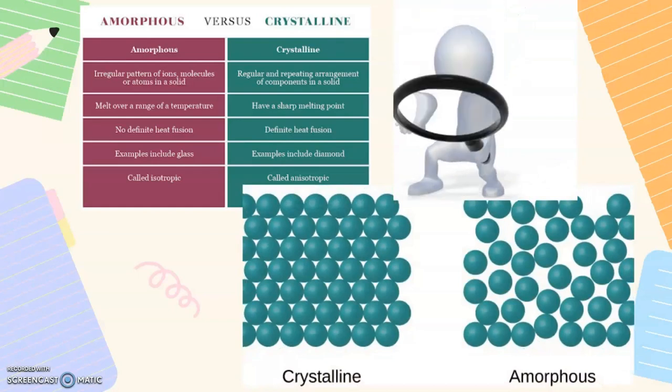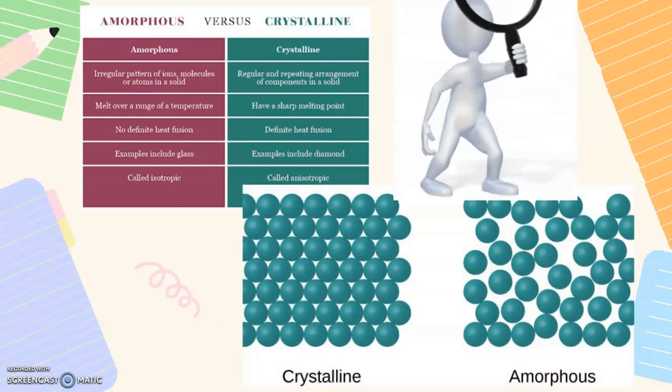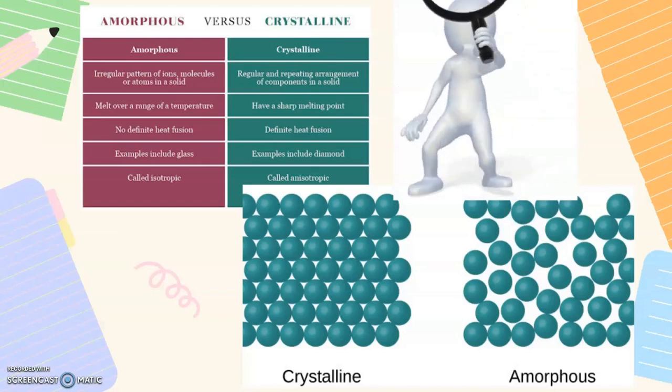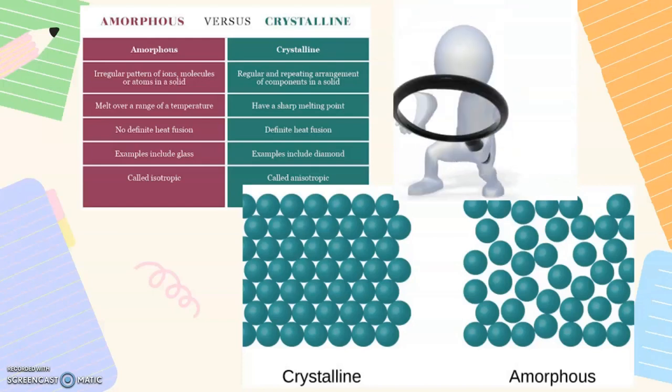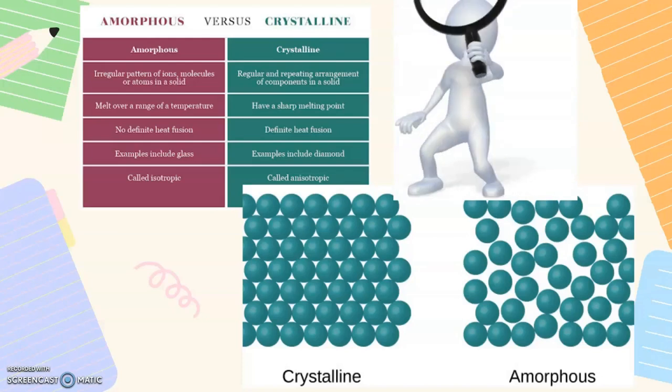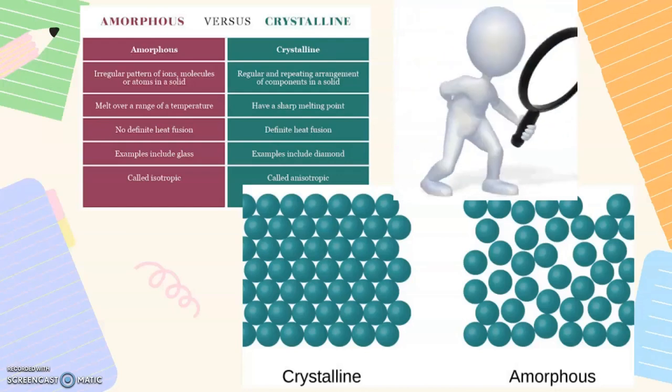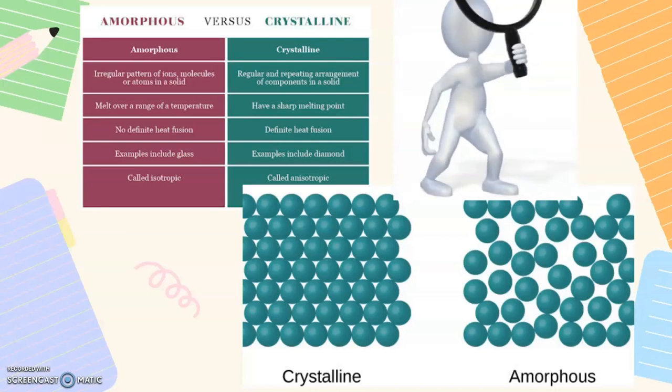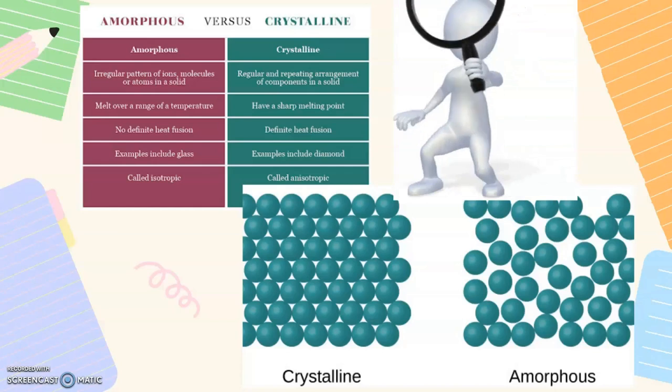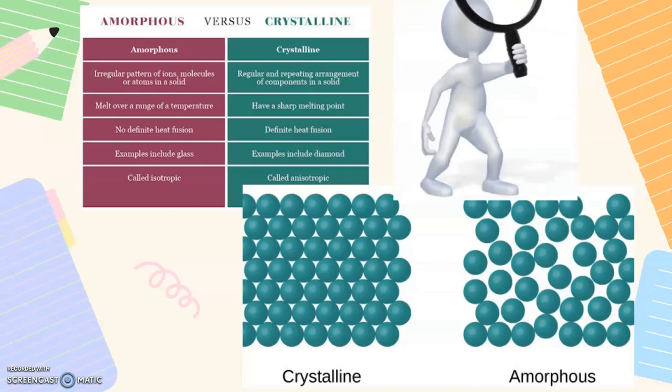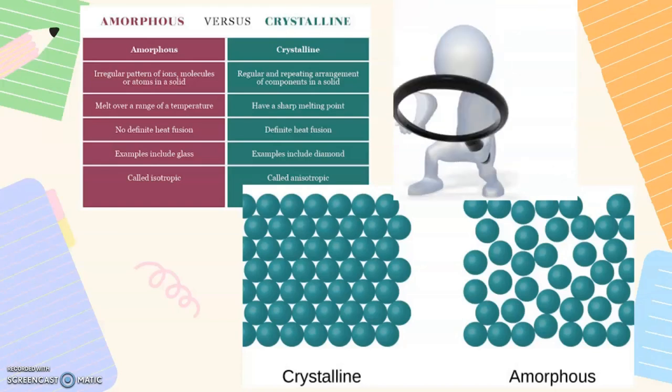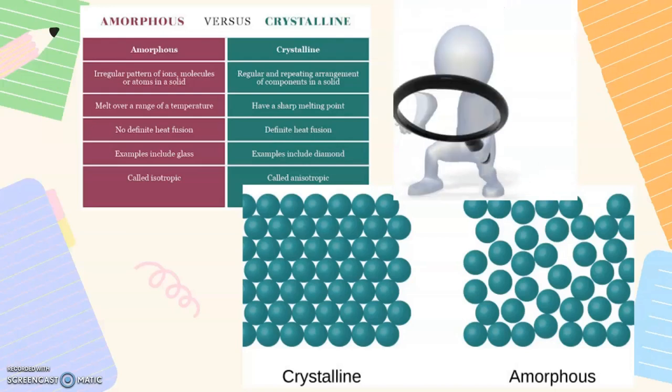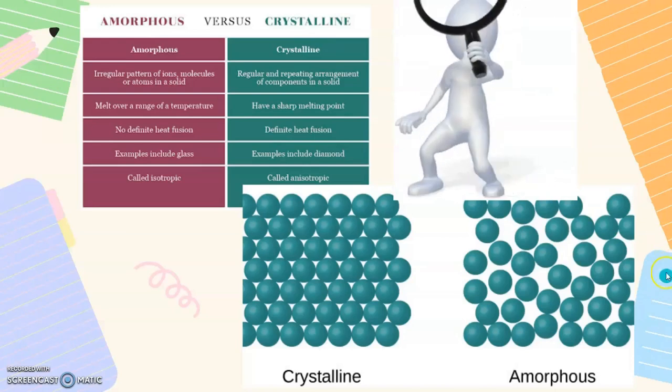First physical property is physical form, which has two types: amorphous and crystalline. Amorphous has irregular pattern of ions, molecules or atoms in a solid whereas crystalline has regular and repeating arrangement of components. Amorphous melts over a range of temperature whereas crystalline has sharp melting point. Amorphous has no definite heat of fusion whereas crystalline has definite heat of fusion. Examples include glass for amorphous and diamond for crystalline. Amorphous are also called isotropic and crystalline are called anisotropic. Here is a picture showing the difference between crystalline and amorphous form, showing that crystalline has regular and repeating pattern of particles inside the structure and amorphous has irregular pattern.